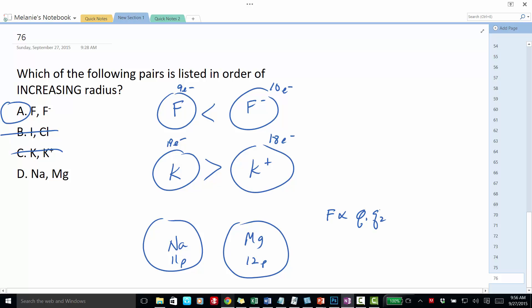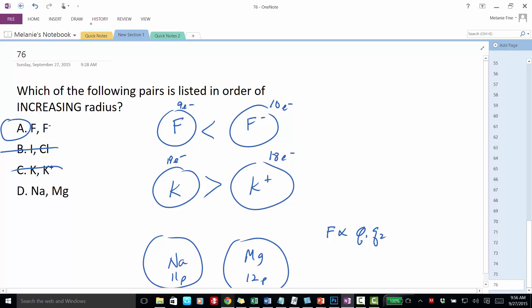It's proportional to the charge of the nucleus over the distance squared. Since the distance is the same, they're both in the third energy level, n equals 3. This isn't going to affect the charge, but the nuclear charge is going to affect it.